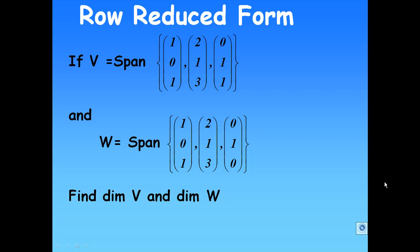Hi, for this recording, we are given V is the span of {(1,0,1), (2,1,3), (0,1,1)} and W is the span of {(1,0,1), (2,1,3), (0,1,0)}. We are going to find the dimension of V and dimension of W.